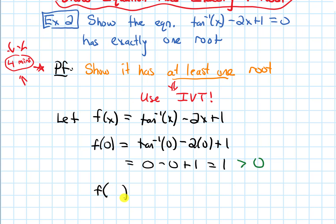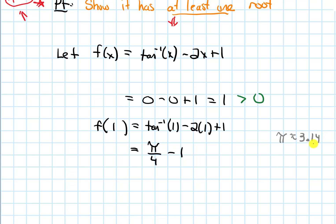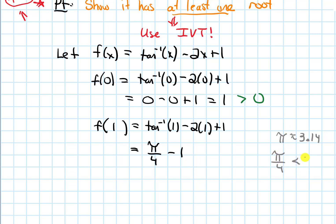Now I need to find an output that will be less than zero. If I want to make the whole output get smaller, it's going to be helpful to plug in a bigger number for x, because with the minus 2x term I'll be subtracting a bigger number. Let's try plugging in x = 1, since it's a nice value for arctan. We get arctan(1) minus 2 times 1 plus 1, which is π/4 minus 1. Since π is about 3.14, π/4 is less than 1, so π/4 minus 1 is a negative number — less than zero. So we have a number giving a positive output and a number giving a negative output.